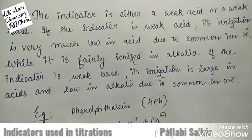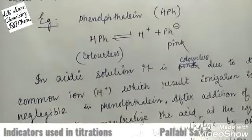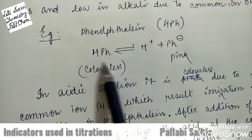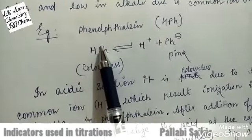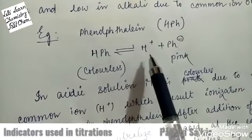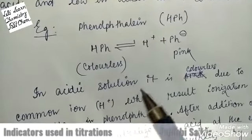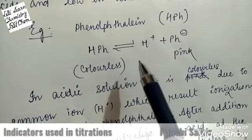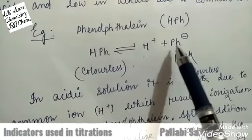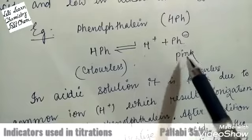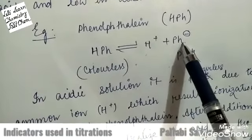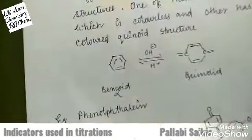For example, phenolphthalein is colorless in acidic medium and it will be pink in basic medium. In acidic medium, phenolphthalein has a common ion H⁺ and hence dissociation is slow. When base is added to the acid using phenolphthalein indicator, the base is neutralized by the acid. After further addition of base, after neutralization, the solution becomes basic. In basic medium, phenolphthalein ionizes to give In⁻ which is pink color. Hence after the equivalence point, the solution becomes pink.